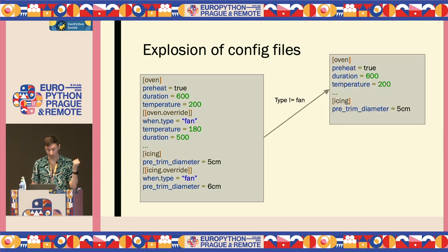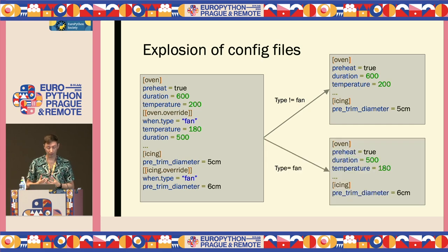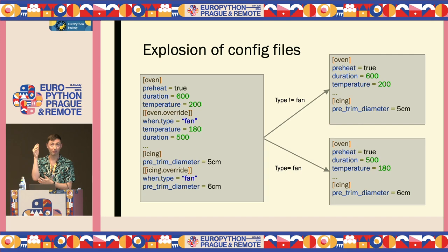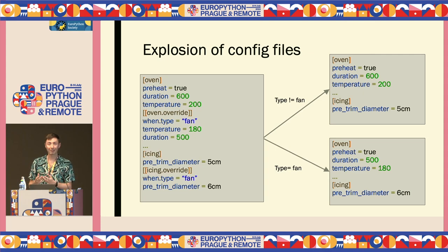Just to show what the effective configs might look like: if you were not a fan oven, your effective config would look one way with the overrides taken place, and if you were a fan oven, it might look different. Something that you never thought would interact with the capability of the system does. You've given power to the domain experts to change the configs however they want based on capabilities, without having to see the code at all — meaning they're more likely to change the config files because they don't have to look in Python code.